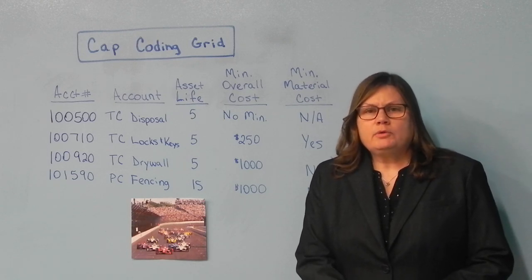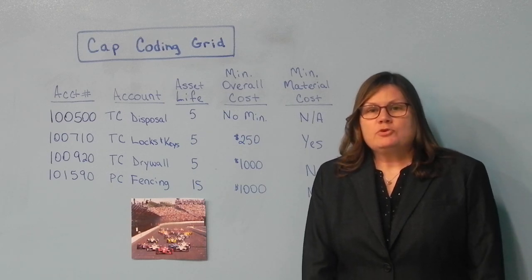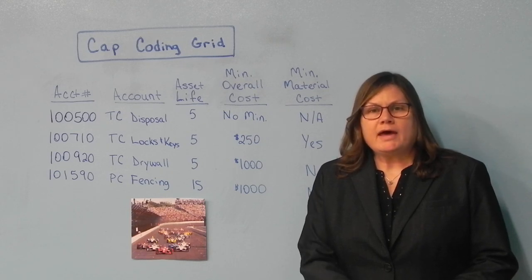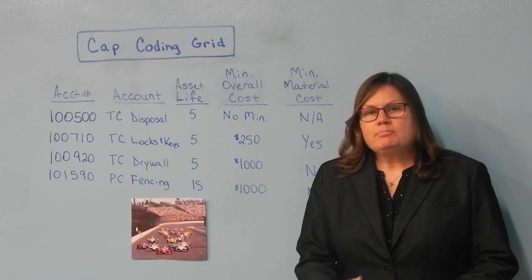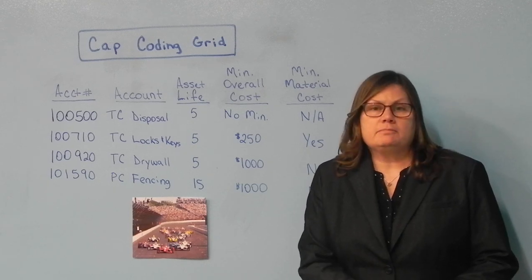Next category would be our minimum asset life. When we record items as capital, we expense it over that asset life instead of expensing it all up front. So it's important that your anticipated life for the expenditure is going to last as long as that asset life that you'll find on your coding grid.